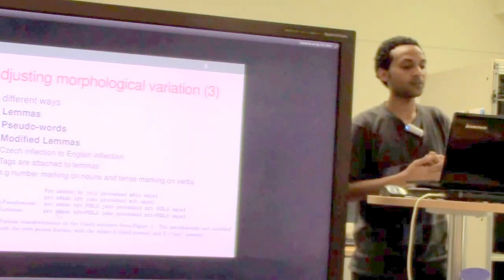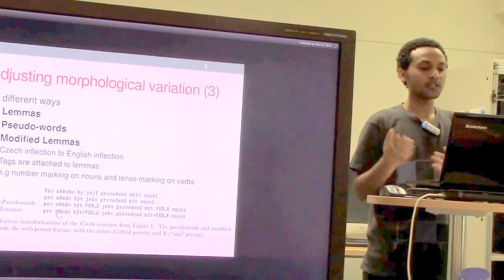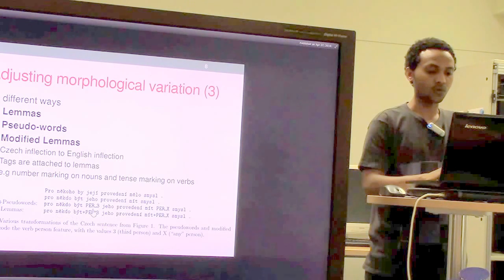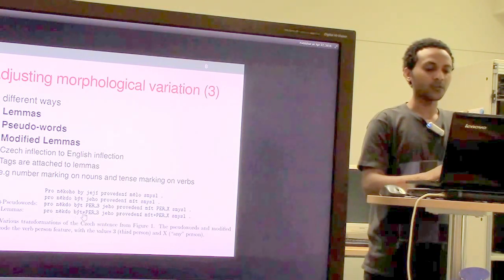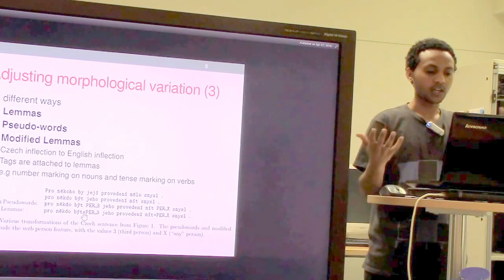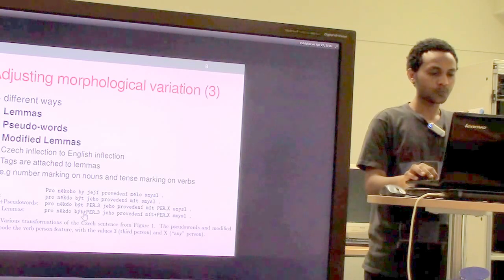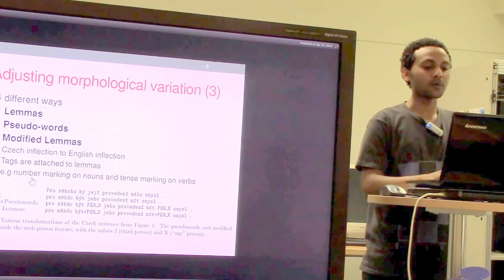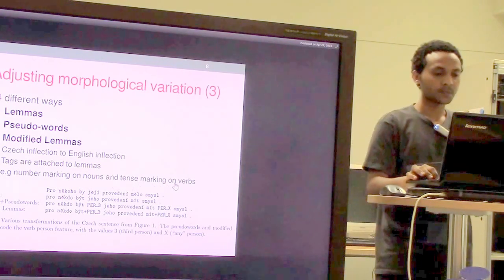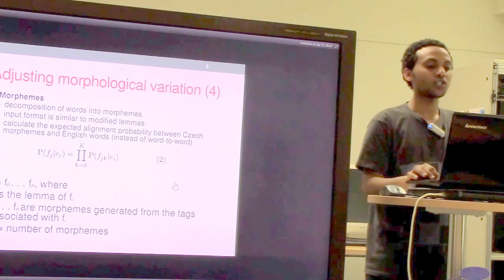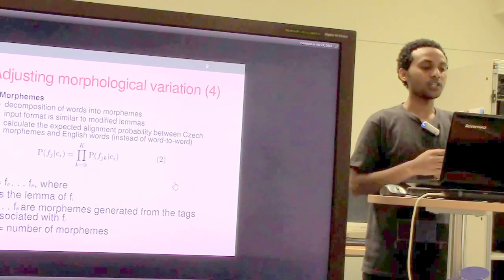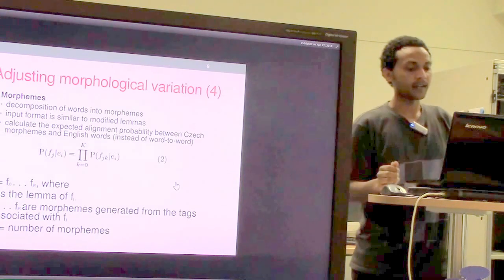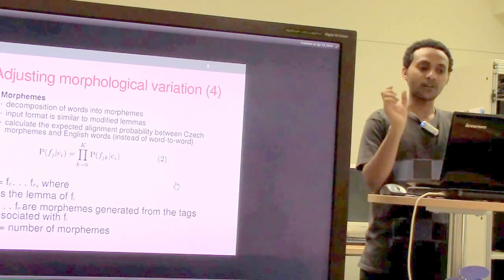The third method is modified lemmas. In pseudo words, the extra words are separate, but in modified lemmas they attach the pseudo words directly to the actual words, in order to make the Czech and English corpus more similar. A convenient example of modified lemmas is number marking on nouns and tense marking on verbs.